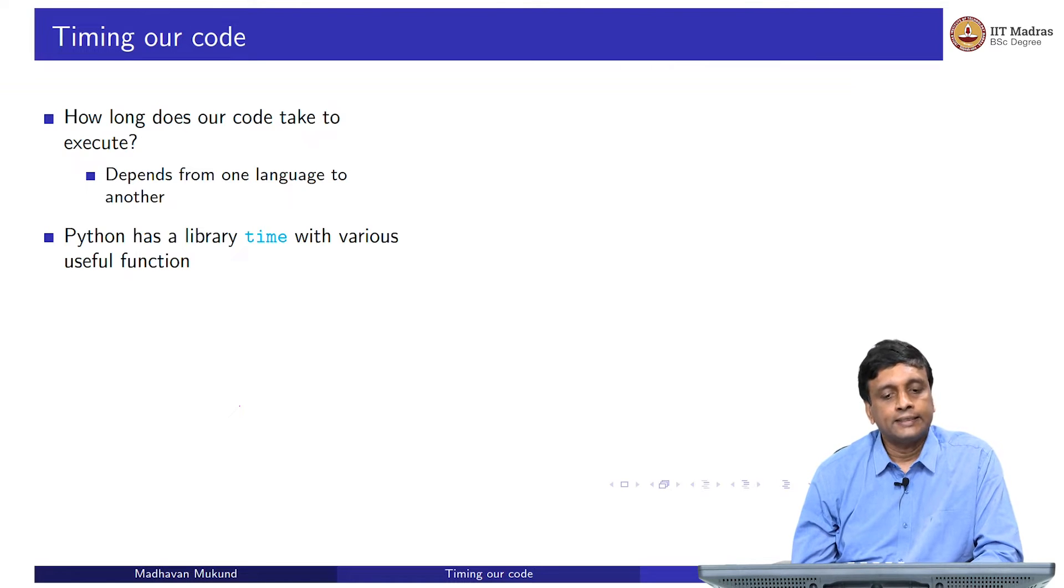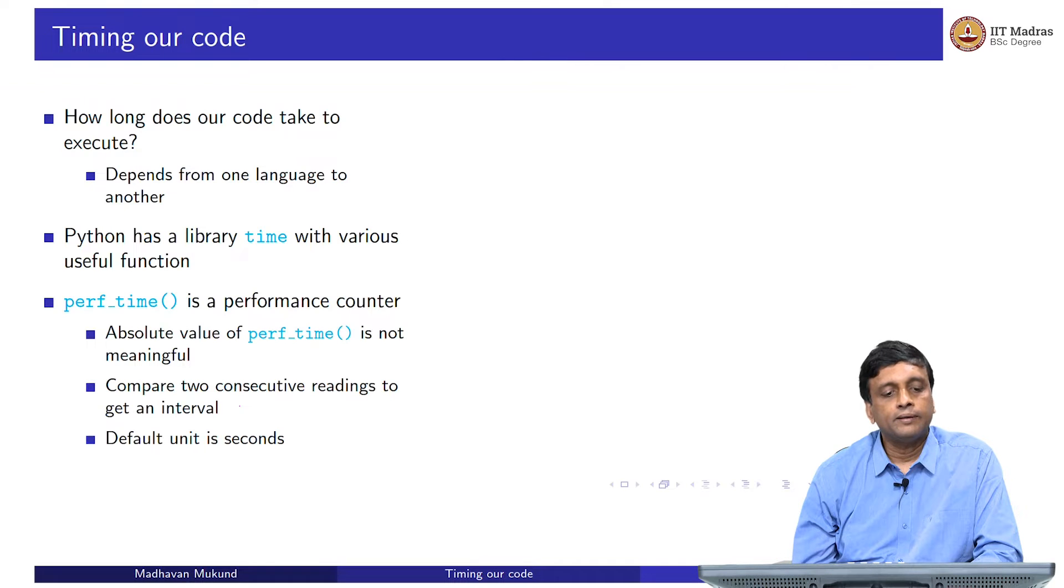Python has a library called time, which gives us some useful functions for doing this. One of them that we will use now is something called the performance counter, which is invoked by this function called perf_time. perf_time does not give us a useful value in itself. If I call this function perf_time, it will give me some number, this number has no meaning in itself. But if I call it twice, then I will get two values whose difference is meaningful.